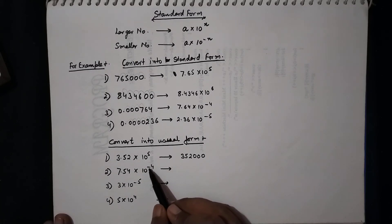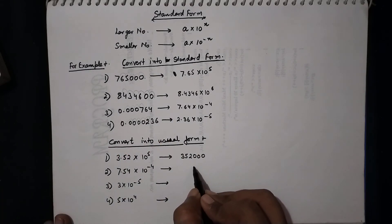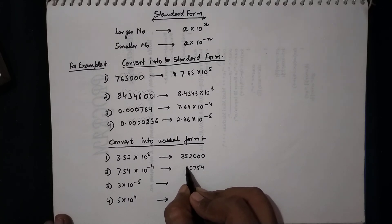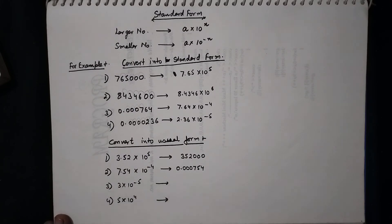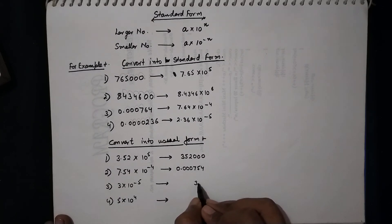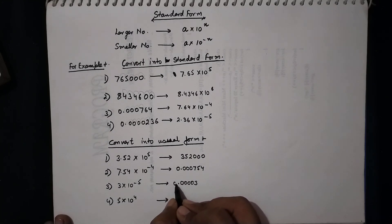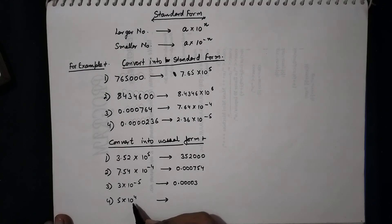For a negative power, the decimal shifts to the left — for example, 5.754 × 10^(−4) gives 0.0005754, shifting 4 places left. Another example with power −5 shifts 5 places left adding a zero. For 5 × 10^4, we write 5 followed by 4 zeros: 50000. That's all for Chapter 2, thank you.